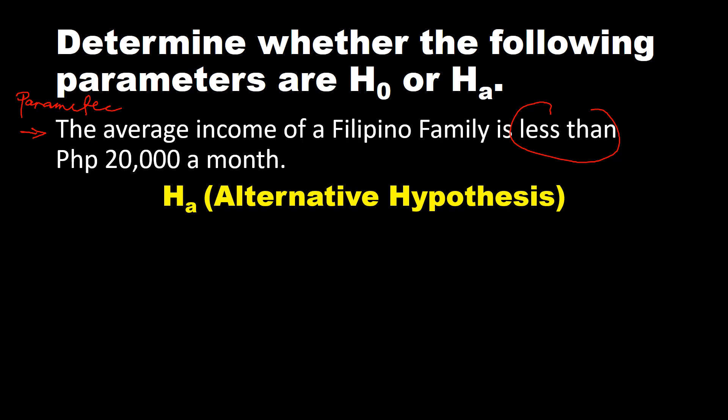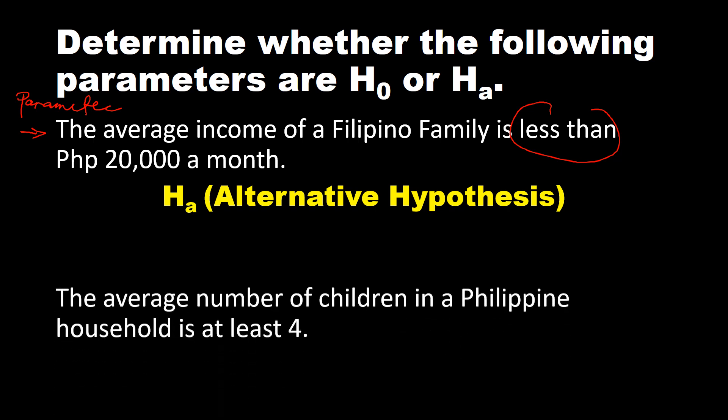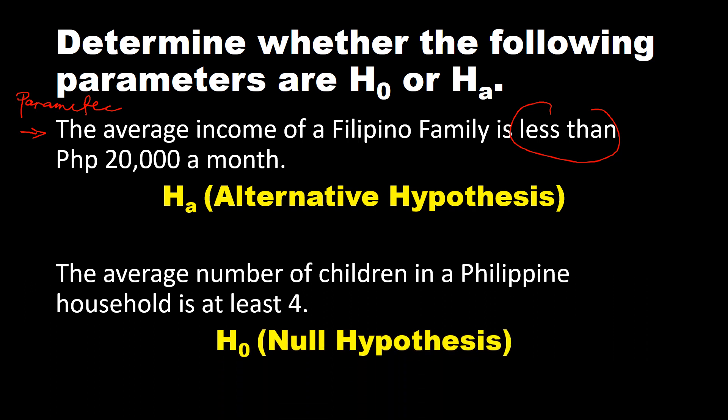Next: 'The average number of children in a Philippine household is at least four.' This is null hypothesis because the keyword 'at least' is used, which is a keyword for the null hypothesis.